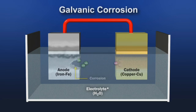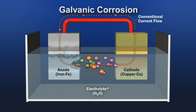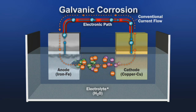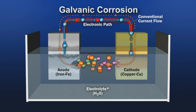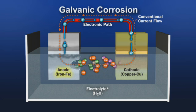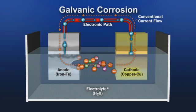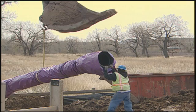Galvanic corrosion is corrosion that is increased because of the current caused by a galvanic cell. If two dissimilar metals are connected, a flow of electrons can begin. The metal lower in the galvanic series acts as the anode, where electrons are given up, and the metal higher in the galvanic series acts as the cathode.